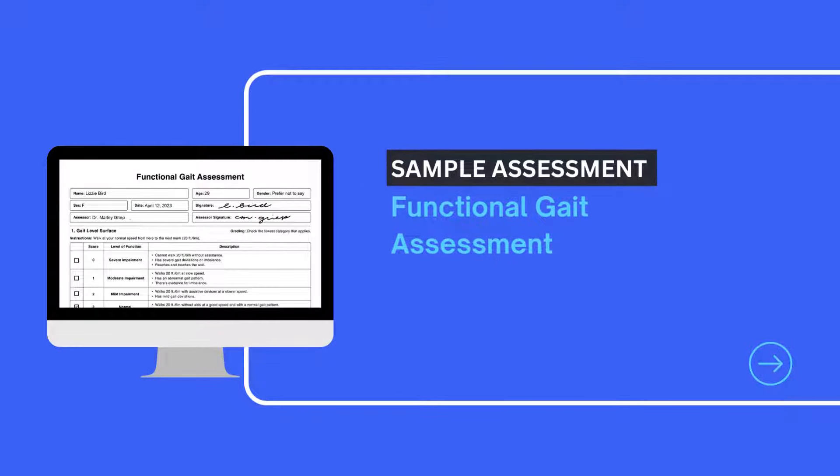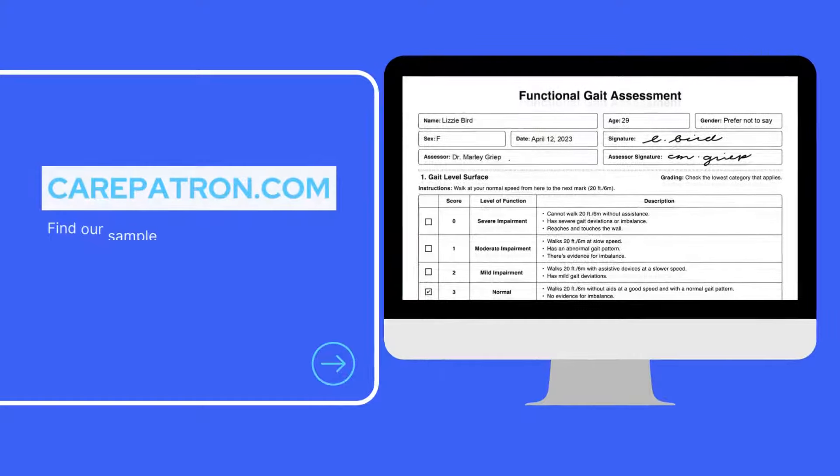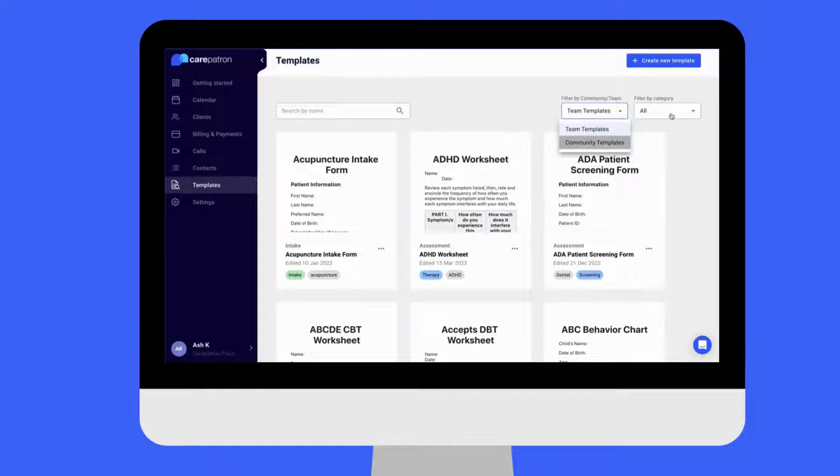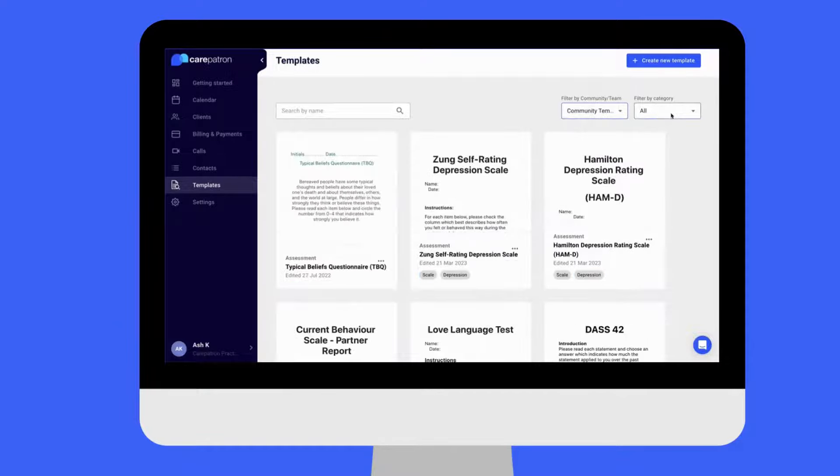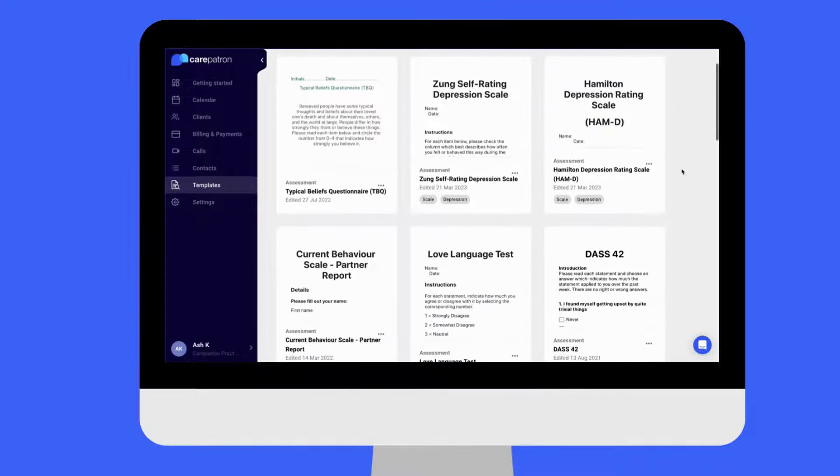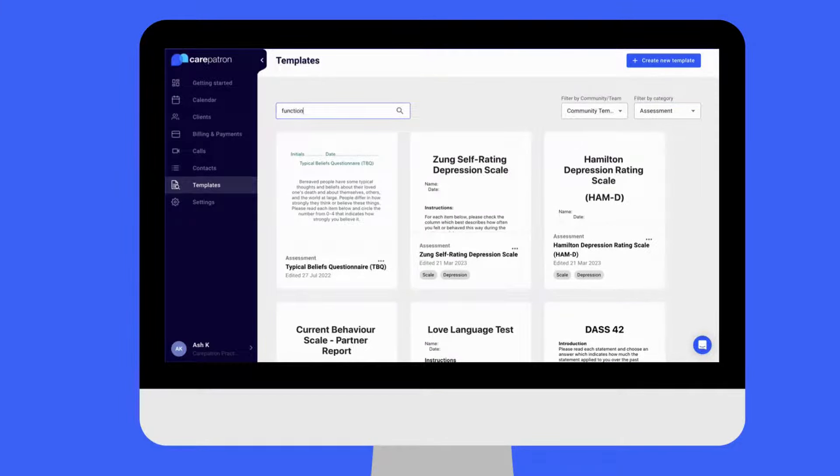To view a sample assessment of the Functional Gait Assessment, check out carepatron.com where you can download and access it for free. You can also access it within our platform, filter by community and by assessment, and type in the keywords to find the note. You can also edit however you wish, and click publish to complete.